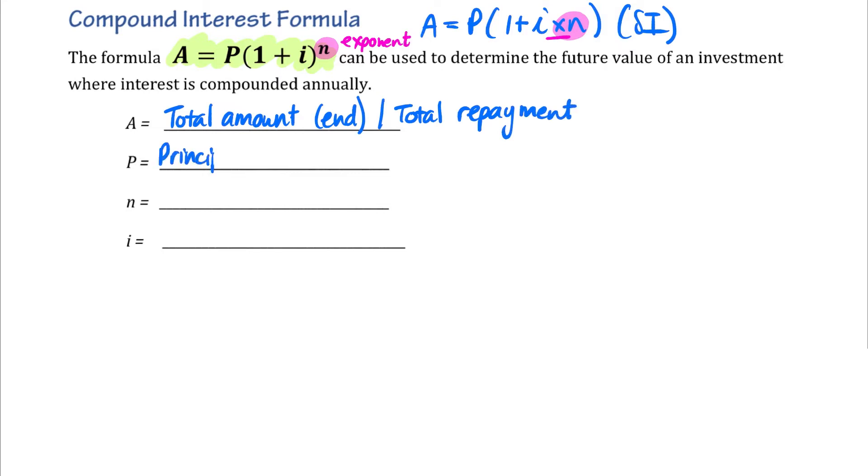P represents our principal amount, which is at the beginning, the start. And then that can either be what I originally invested, or my original loan. In other words, how much I borrowed.